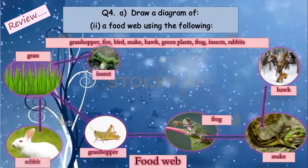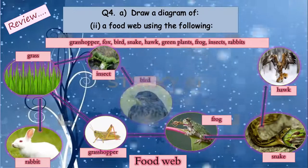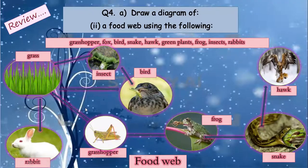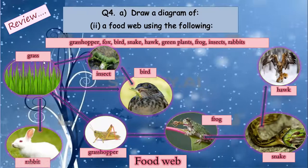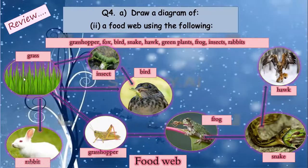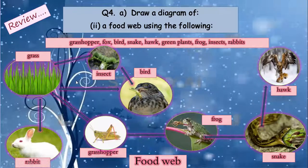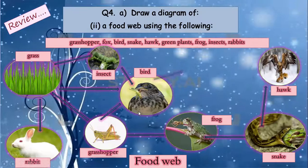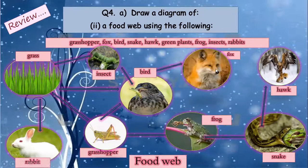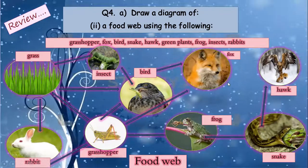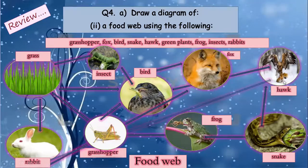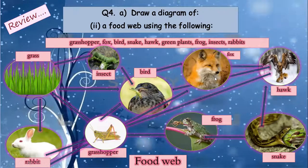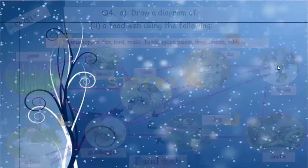A caterpillar is eaten by a bird. A bird also eats the grasshopper, and eats grains, seeds, and fruits of plants. The bird is also eaten by a fox. A rabbit is also eaten by a fox. Small birds are eaten by a hawk. A rabbit is also eaten by a hawk. A fox is also eaten by a hawk. That was the food web you already read or learned before.